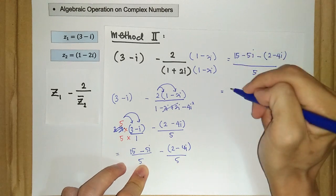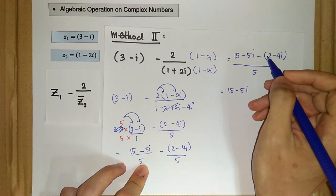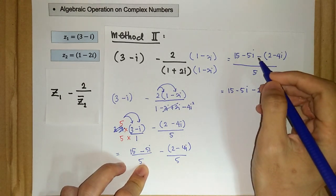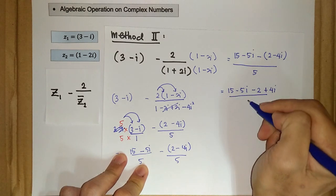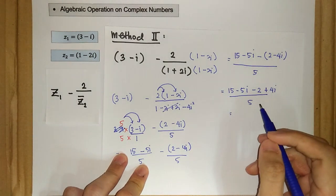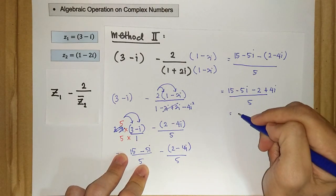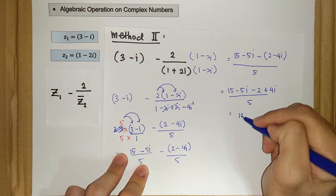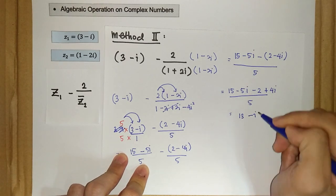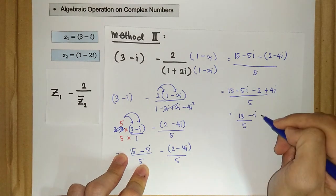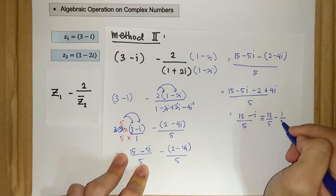Now we can merge these fractions into one single fraction. We have 15 minus 5i, minus (2 - 4i), all over 5. Expanding: negative times positive 2 is negative 2, and negative times negative 4i is plus 4i. So we get 15 minus 5i minus 2 plus 4i over 5. Simplifying: 15 minus 2 equals 13, and negative 5i plus 4i equals negative i, giving 13 minus i over 5, which can also be written as 13 over 5 minus 1 over 5 i.